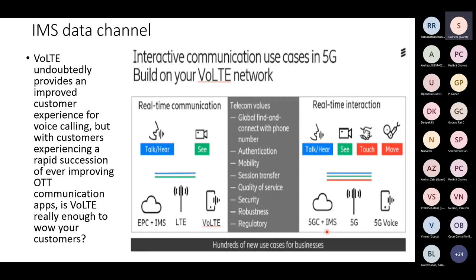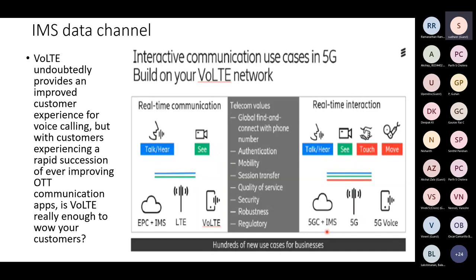Does it mean that if we buy a phone today with 12 band combinations, and tomorrow a 13th combination comes, we are already obsolete? The 13th is an additional combination. So with 12 combinations vs 13 combinations — obviously 13 with one additional combination is better. Obviously 13 is preferred.